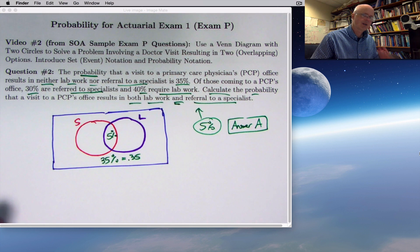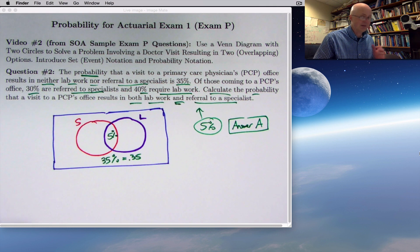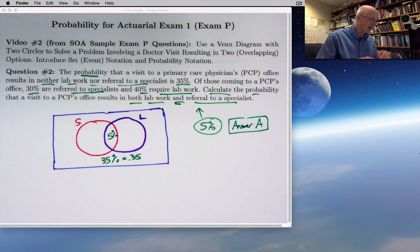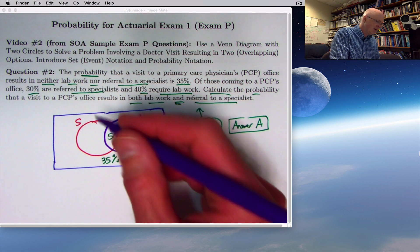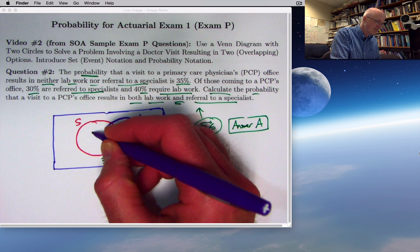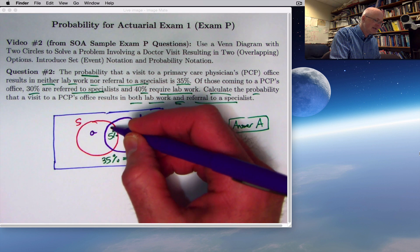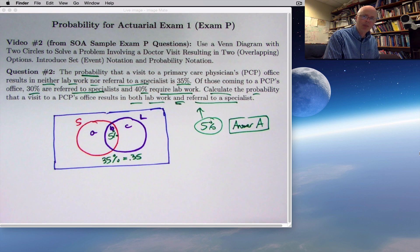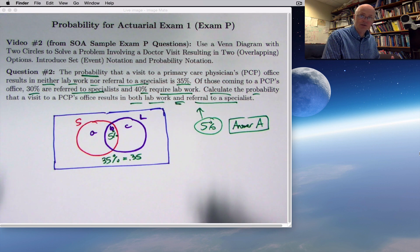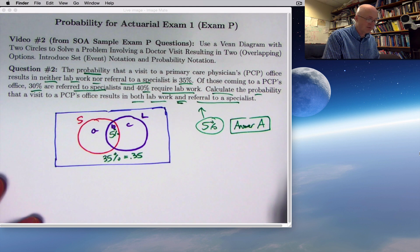That answers the question. But let's fill things in more to understand the bigger picture and confirm we really thought about it correctly. On an actual actuarial exam, it's probably not a good idea to spend too much time doing what I'm about to do. As far as being more sure, we could label these different regions A, B, and C.